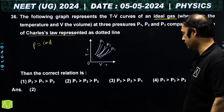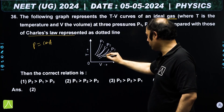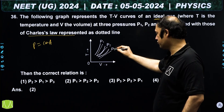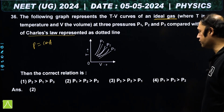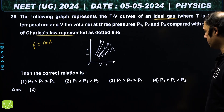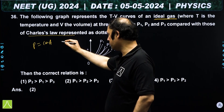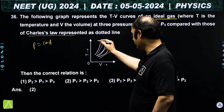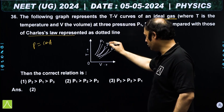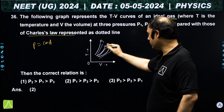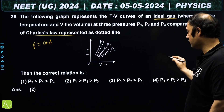In a constant pressure process, T and V graph is a straight line through the origin. From PV = nRT, we get T = (P/nR)V, so the slope of the T-V graph is P/nR. We need to compare which line has greater or lesser slope.